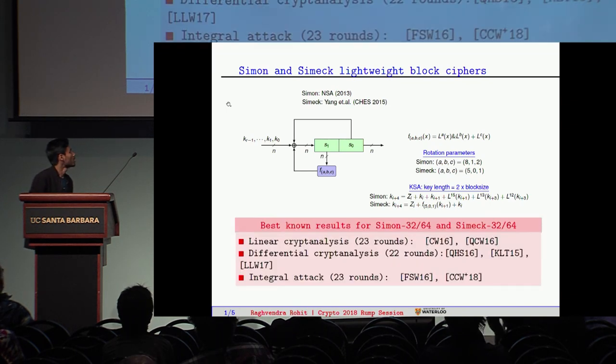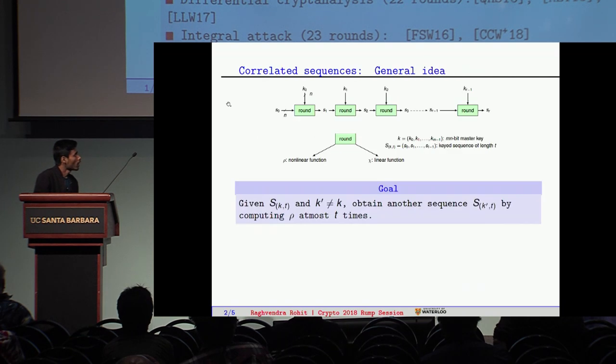If we look at the best known results on these two ciphers, till now they can reach a maximum of 23 rounds out of 32 rounds. This means the security margin is still 28%. So, how to improve it?